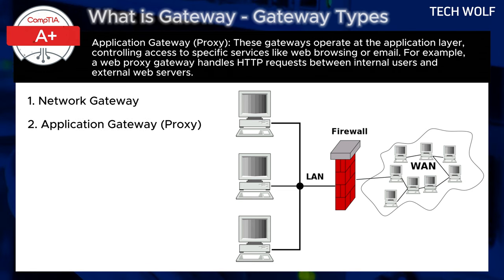The second type is the application gateway, or proxy. These gateways operate at the application layer, controlling access to specific servers like web browsing or email. For example, a web proxy gateway handles HTTP requests between internal users and external web servers.